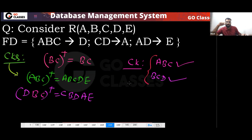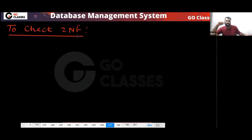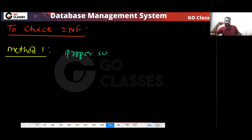So what is the nonprime attribute in this relation R? The nonprime attribute is E. Now, to check 2NF or not, let's apply method number one — that is a very easy method. What is method number one? Just check every proper subset of the candidate key.